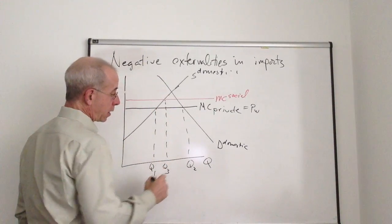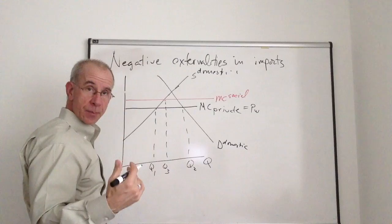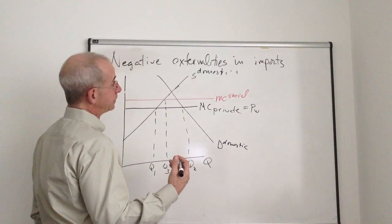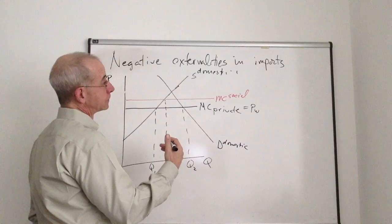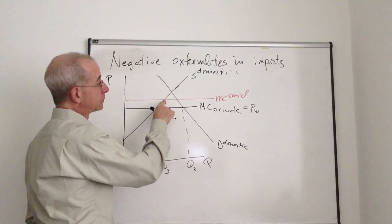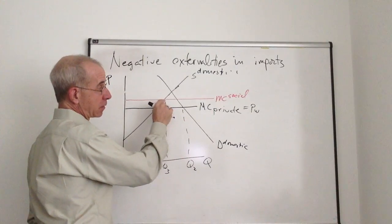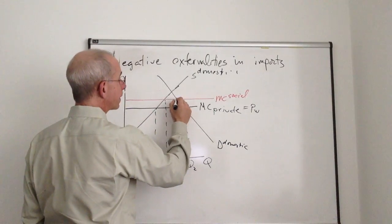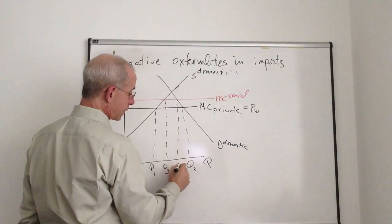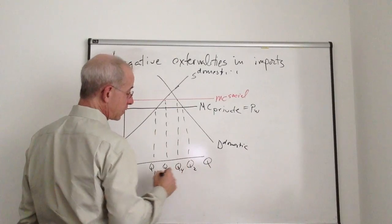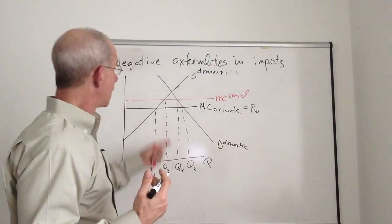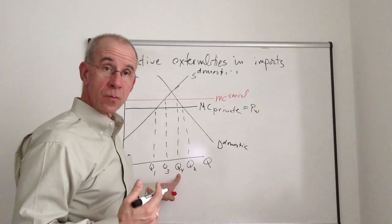From society's standpoint, you're going to look at where social cost of production equals the social price intersects with the domestic supply curve. And if consumers are basing their decision on the social cost of importing, they will consume Q4.